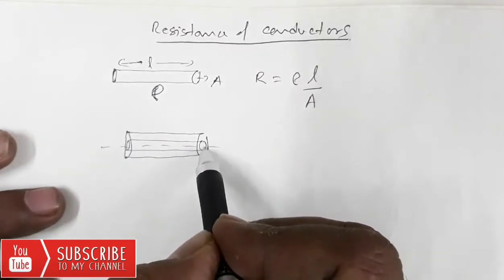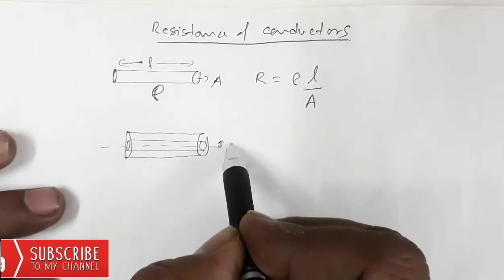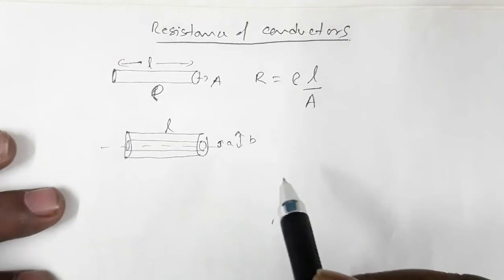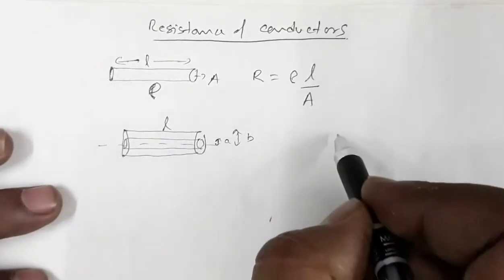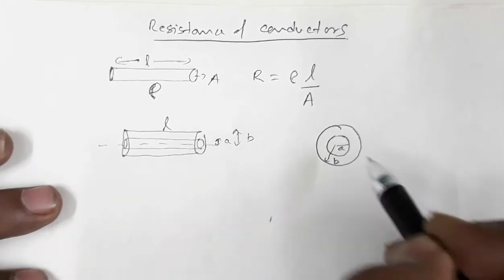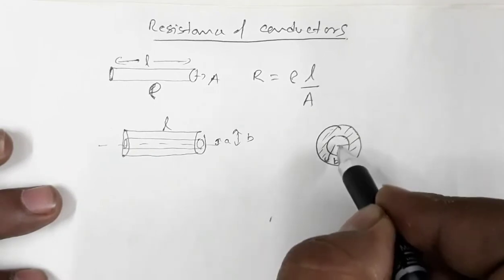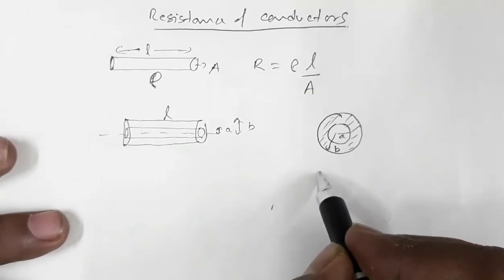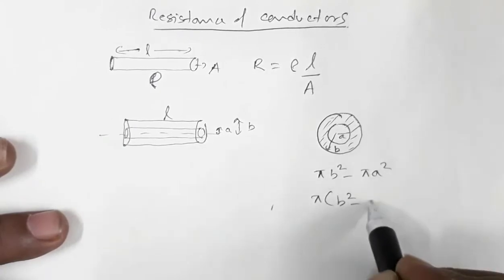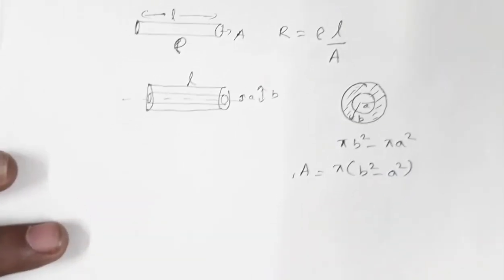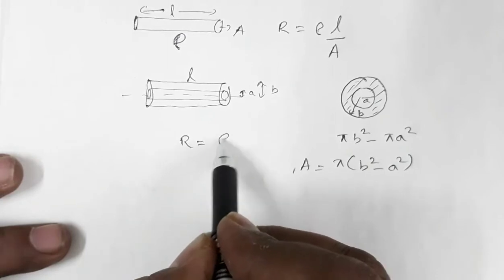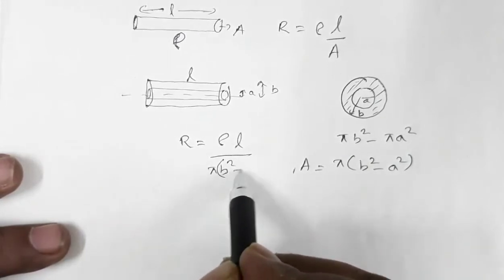Now suppose you have a cylindrical shell where the inner part is hollow. The inner radius is A and outer radius is B, and L is the length. Observing the cross-section, the cross-sectional area will be pi B squared minus pi A squared, which can be written as pi times (B squared minus A squared). So for this hollow cylinder, the resistance R will be equal to rho L divided by pi (B squared minus A squared).